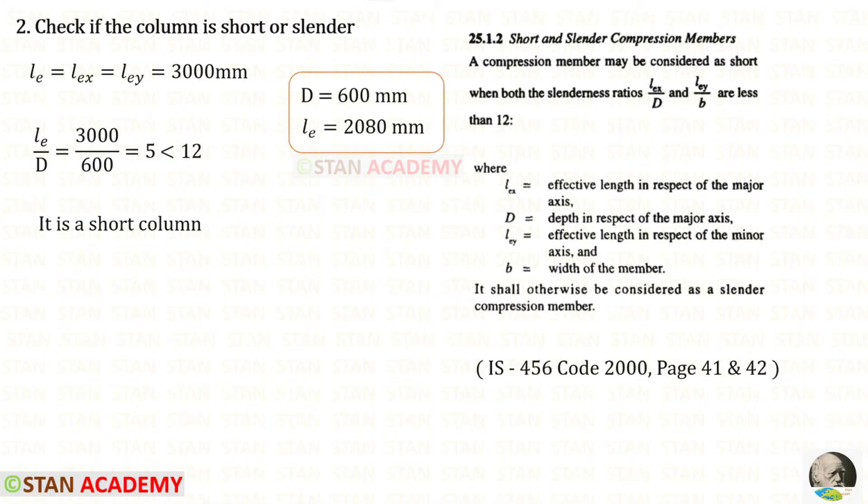Now let us check if the column is short or slender. We have to use these two formulas and check. In our case, Lex and Ley will be equal to Le, and D and B also will be 600, so we can check only one time. For Le upon D we will get 5, which is less than 12, so it is a short column.